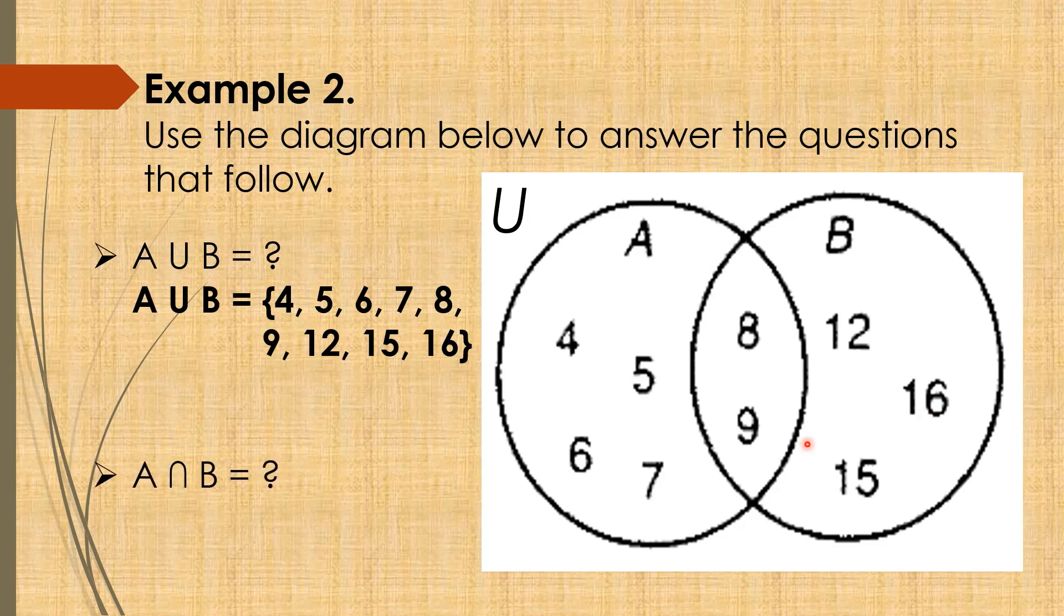Next, A intersect B. Ano yung numbers na parehong mayroon ang A at B? O saan nagtagpo o saan nagtagpo ang part ng A at B? So, the answer is A intersect B is equal to 8 and 9. Dahil sa gitnang part na ito, nagtagpo ang circle A at circle B.